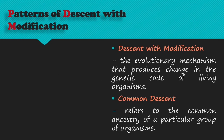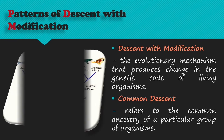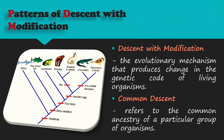Evolution is a combination of descent with modification and natural selection, and there are several mechanisms for such changes. When people are aware of the several mechanisms of evolutionary change, they can understand how evolution works and how humans and other animals have evolved from primitive living organisms.